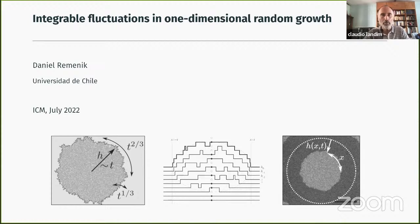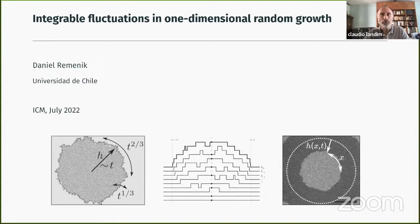Welcome everyone to this probability session of the ICM. It's my great pleasure to introduce Daniel Remenik, my South American colleague from the University of Chile. Daniel gave very important contributions to the study of the KPZ equation and exact solutions of the TASEP. Today he will speak about integrable fluctuations in one-dimensional random growth. Thank you, Daniel.